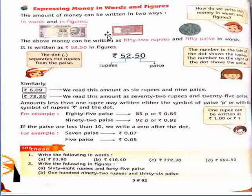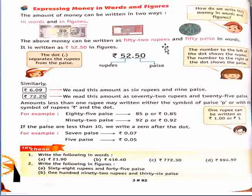Our total is 52 rupees and our money is 50 rupees. If we write in words, here you can see it is 52 rupees and 50 rupees in words. We will write in this type. And if we write in figures, firstly we will use the symbol of rupees. This is the symbol of rupees.